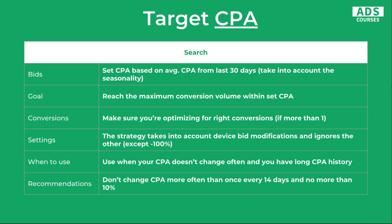Another strategy is Target CPA. You set the target CPA that you want to reach, and you should set it based on the average CPA from the last 30 days. It's a good strategy if your account has some history and your conversions have data from at least the last 30 days. You could set up a Target CPA campaign without any historical data, but the results would be worse and the learning process would take a lot more time. The goal is to reach maximum conversion volume within your target CPA, so make sure you're optimizing for the right conversions. The strategy takes into account device bid modifications and ignores others except minus 100. You should use Target CPA when your CPA doesn't change often and you have a long CPA history.